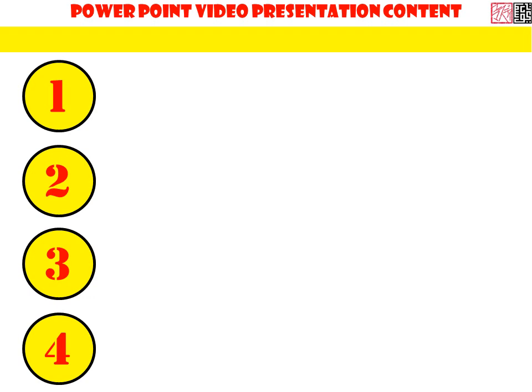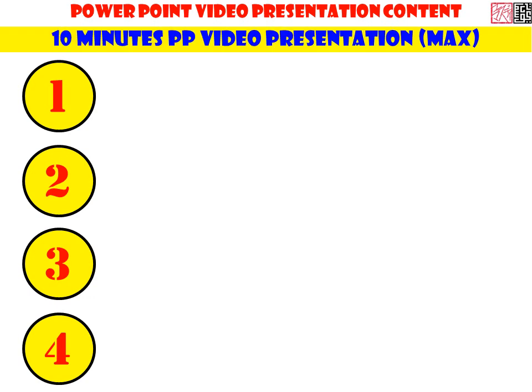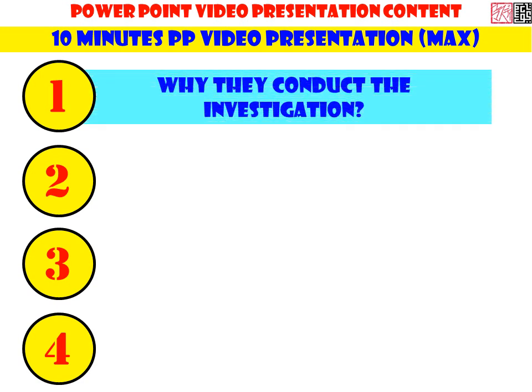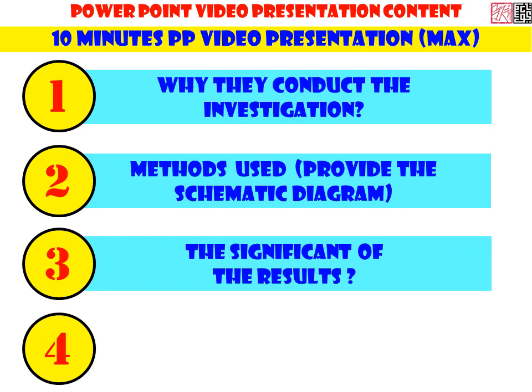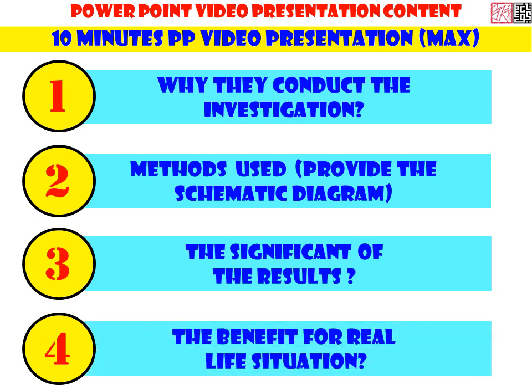For the PowerPoint video presentation in terms of content, you have to make a 10-minute PowerPoint video presentation — maximum 10 minutes. First, you need to provide information on why they conducted the investigation based on the paper. Point two, explain the method used in the paper, provide the schematic diagram, and explain it. Point three, explain the significance of the results obtained from the paper. And lastly, explain the benefit of the results obtained from the paper for real-life situations. These are the four main contents you need to provide in the video presentation.